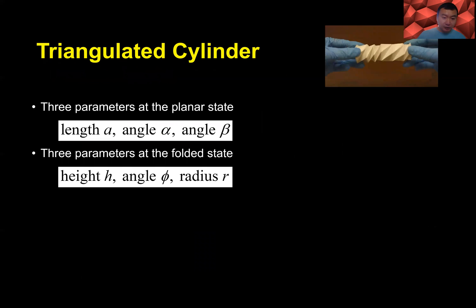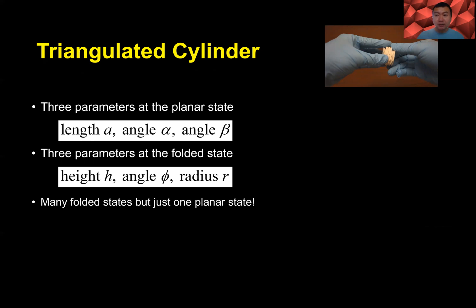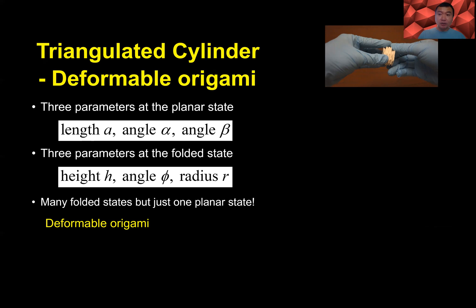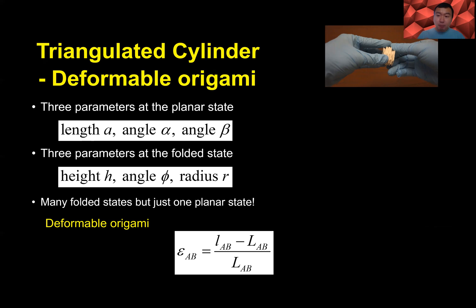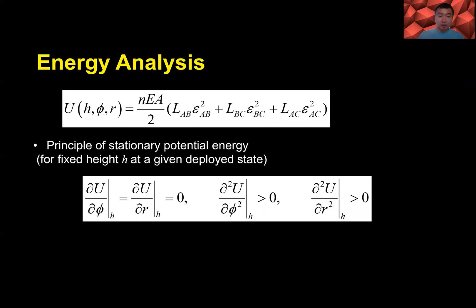We have three parameters at the planar state and three parameters at the folded state. The problem is we have many possible folded states but only one planar state. This means that during the folding and deploy process, strain develops — this is deformable origami. To simplify the problem, we define engineering strain at the creases and consider all energy stored at the creases and panels using a truss model, which captures the main deformation features of the triangulating cylinder pattern. We use energy analysis to find the equilibrium state at the folded or deployed state.